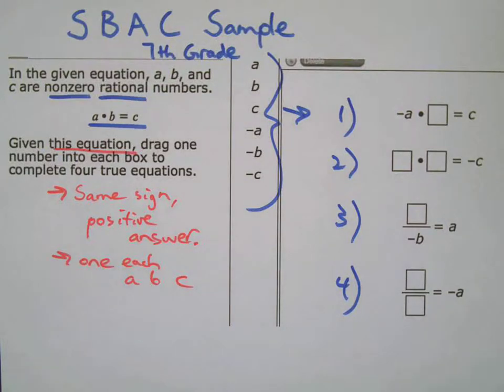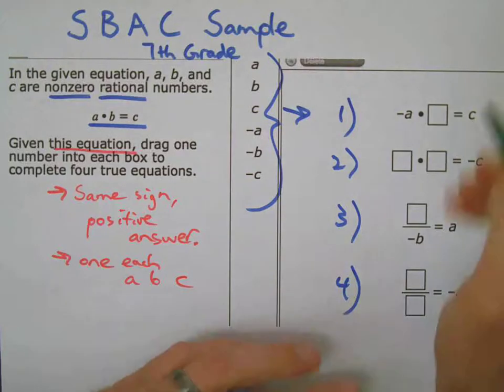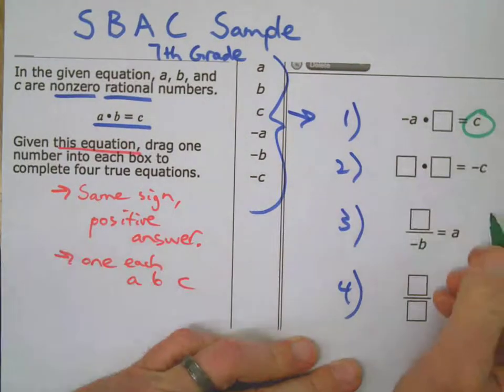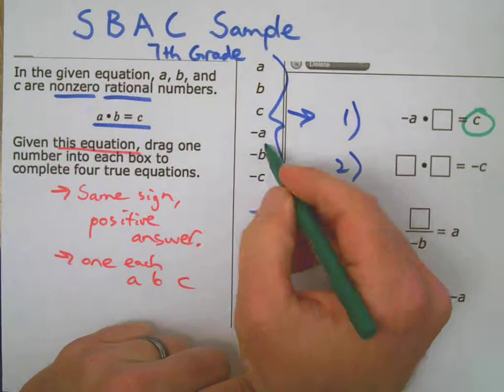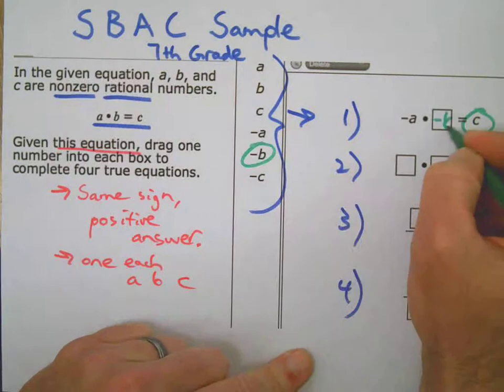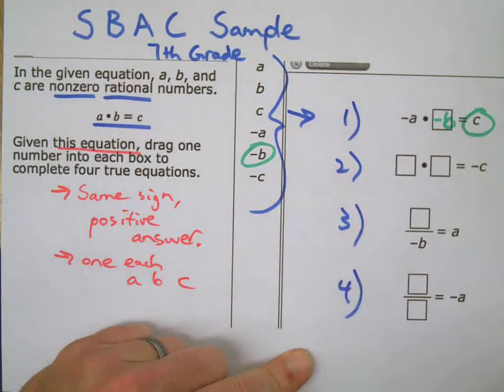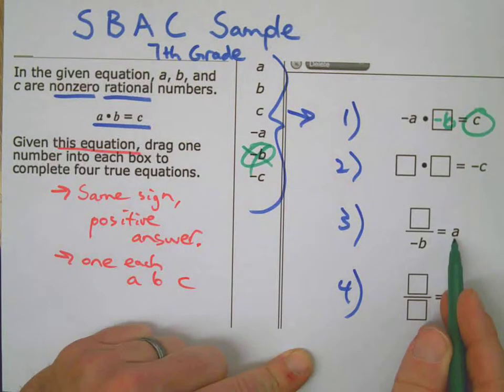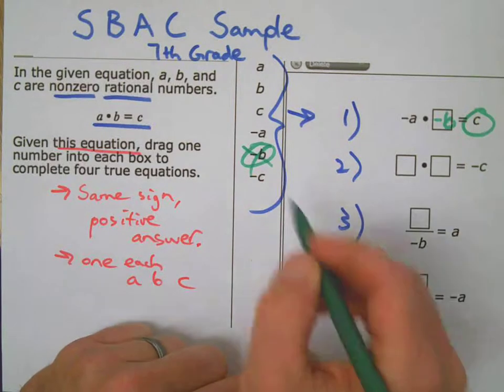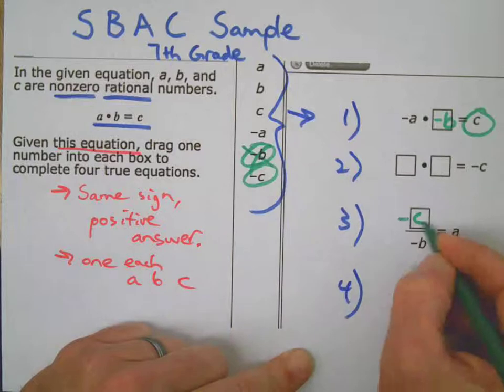So here we go. This has positive answer, so I need negative B. Same sign, positive answer. Here's another one with a positive answer. So I need same sign, negative C.